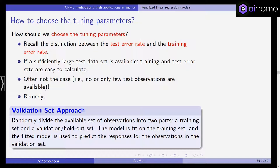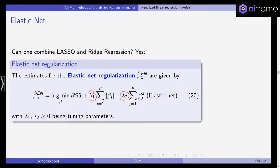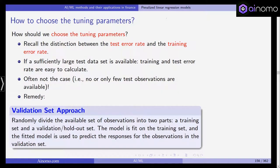If you fit a model and look at the error on your training data — the data used to fit the model — you have the training error rate. Usually the training error rate will be very small, because the RSS, for example, is minimized in order to find the coefficients. So the training error is by definition at its minimum once you've fitted the model.